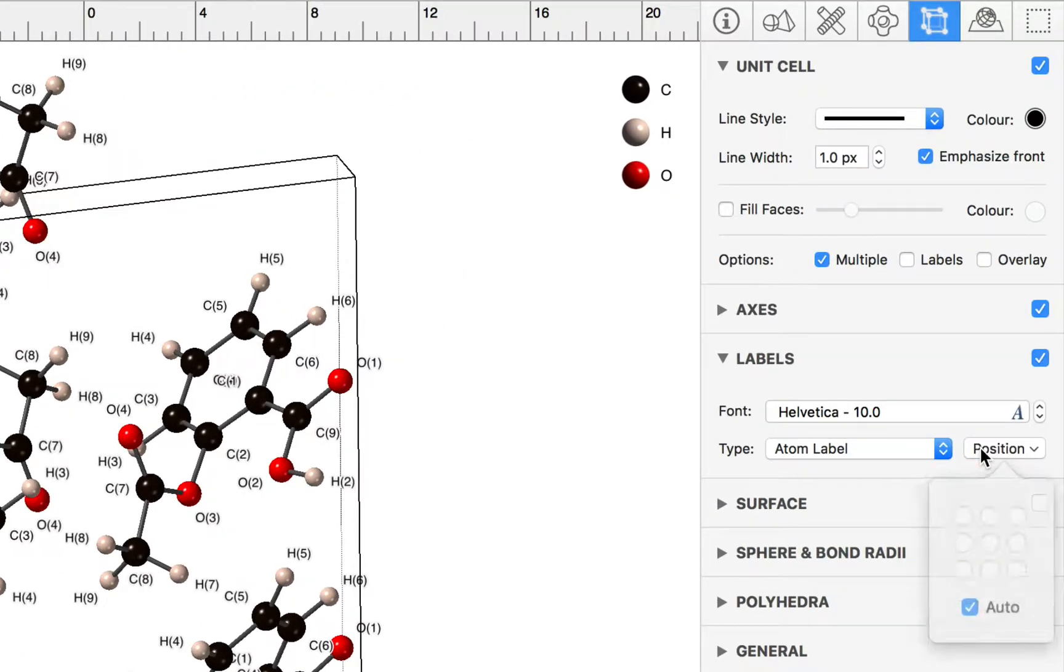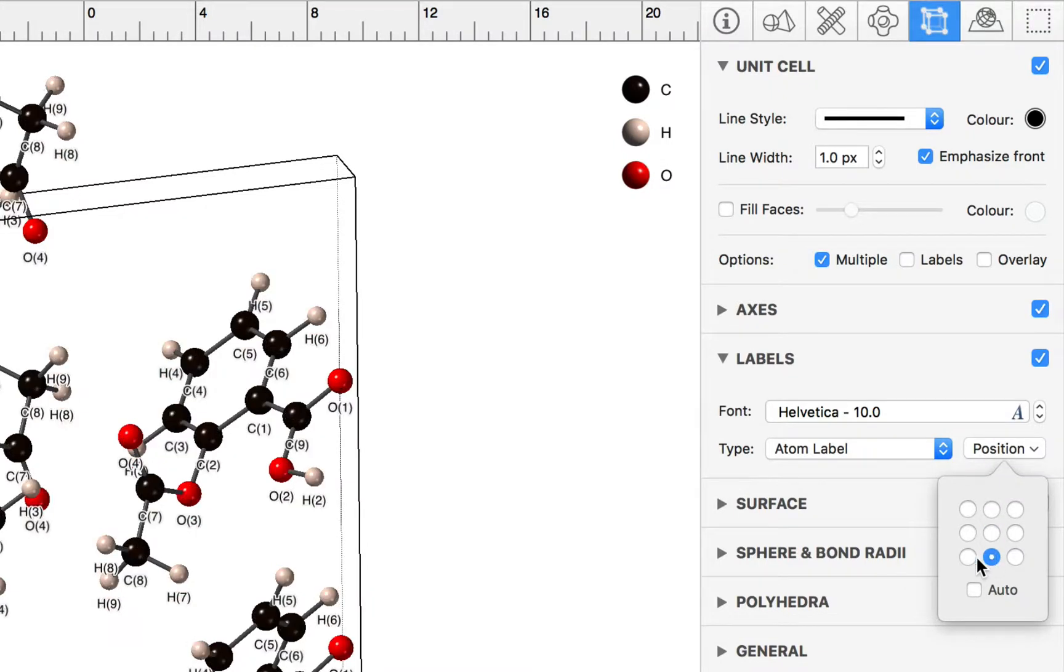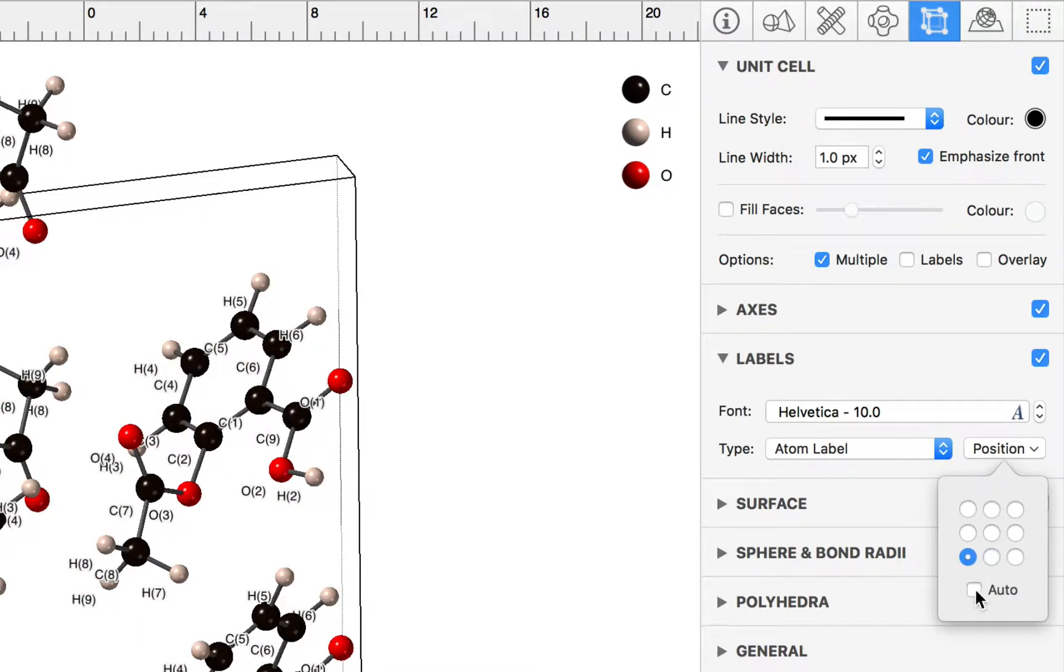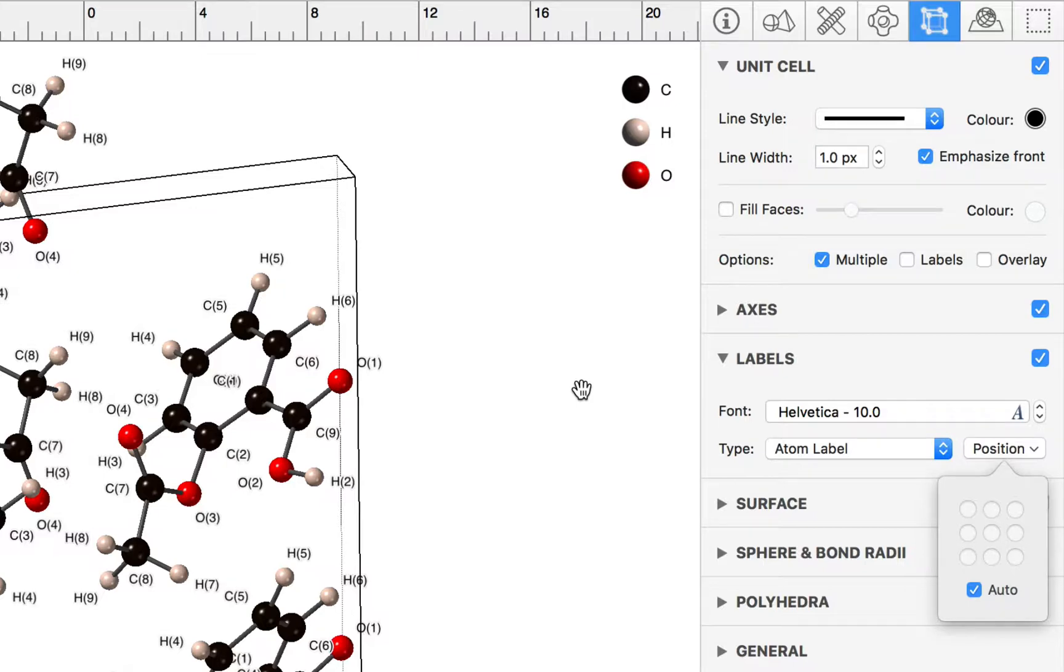You can click on the position popover and you can change that. We can reposition the labels in different parts of the plots, but the auto-labeling works pretty well most of the time.